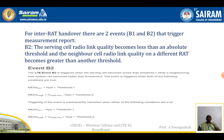Event B2 is when the serving cell radio link quality becomes less than an absolute threshold and the neighbor cell radio link quality on a different radio access technology becomes greater than another threshold. LTE1 B2 is triggered when the serving cell becomes worse than threshold 1 while a neighboring intersystem cell becomes better than threshold 2.